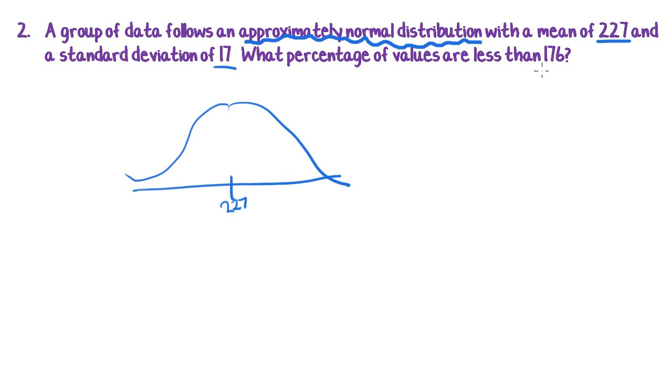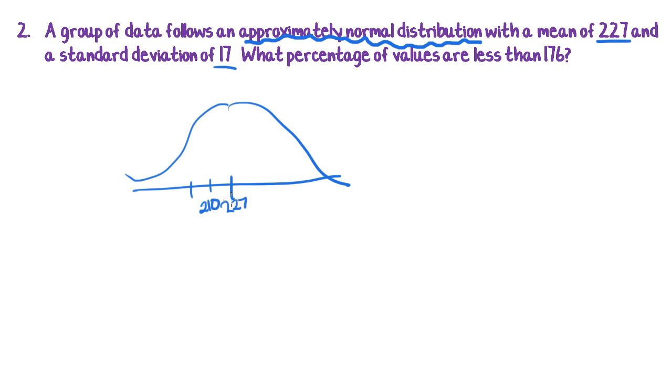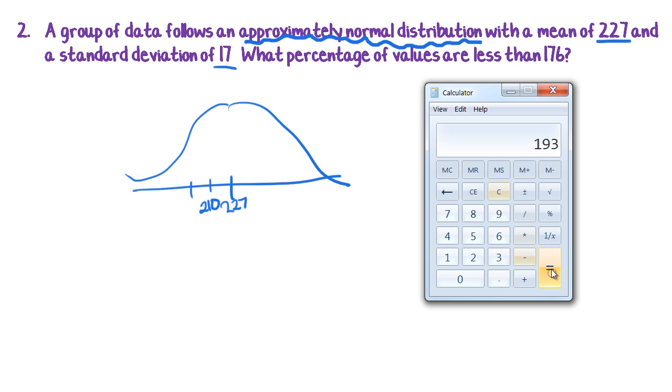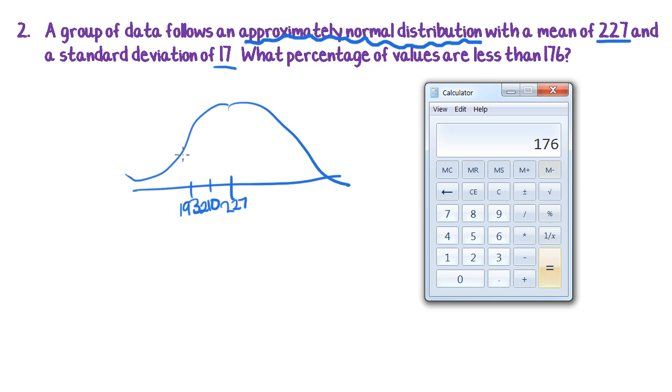So draw yourself a quick bell curve and put your mean in the middle at 227. And are we going up or down? We're looking for a value that's downwards of that, so I'm going to go down here first. So I bring up my calculator and I say 227 minus 17, which is my standard deviation, and I get 210 for this point here, and again I get to 193, and again I get to 176.